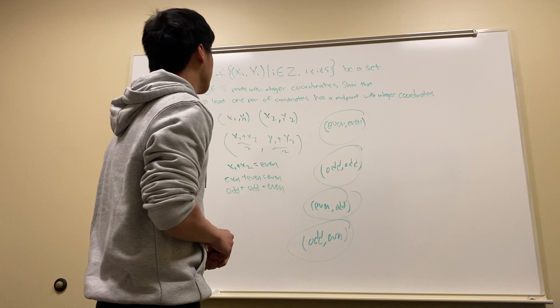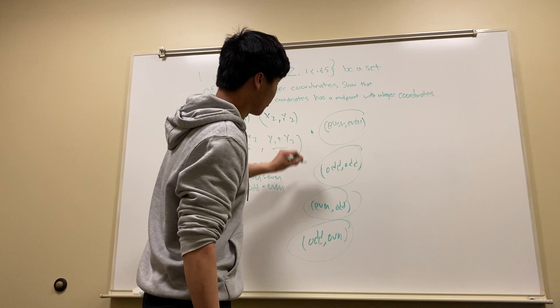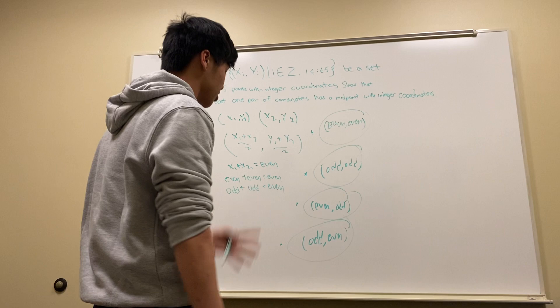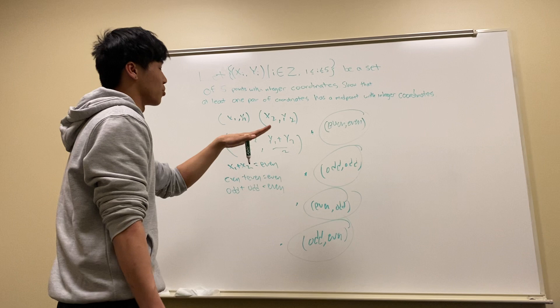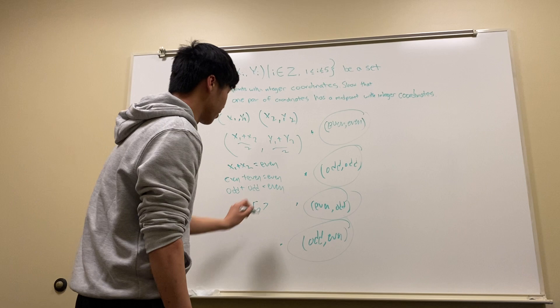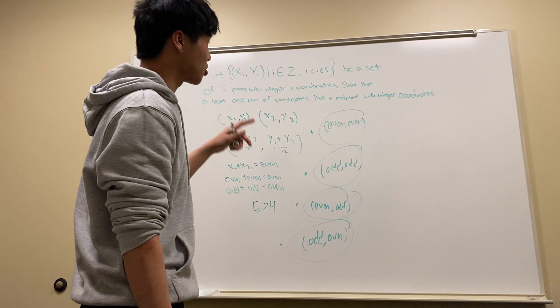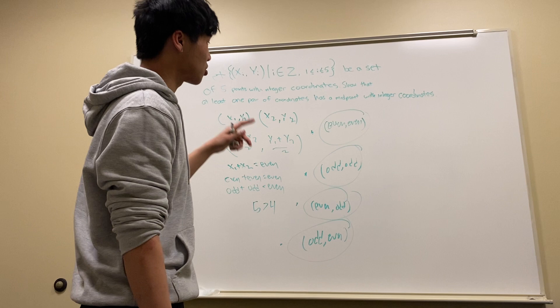Since the question tells us we have a set of five points, let's consider the worst case scenario: with five points, maybe each point falls into one of each category. With four points we can fill up four categories — that's the worst case. The fifth point would have to fall under one of these four categories, because we have five elements, which is greater than the number of categories. By the pigeonhole principle, there exist two points that share the exact same parities, and since they share parities there must be a midpoint with integer coordinates as well.